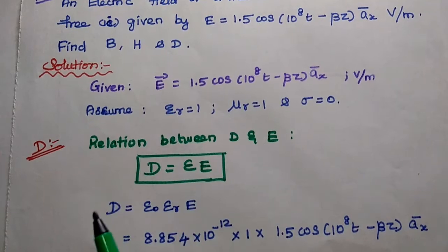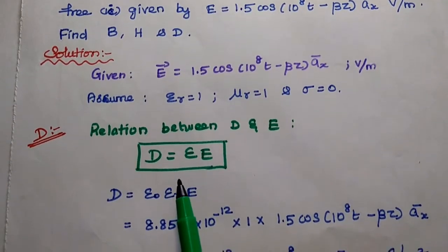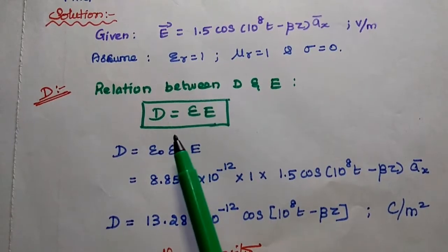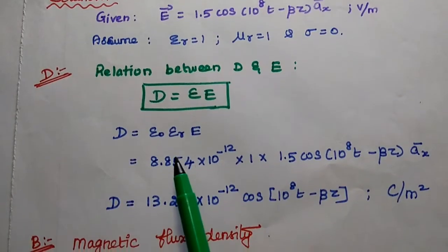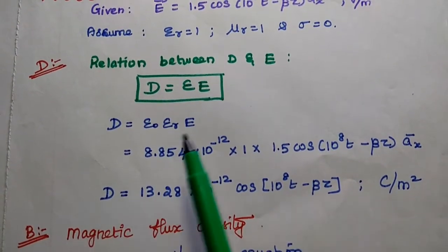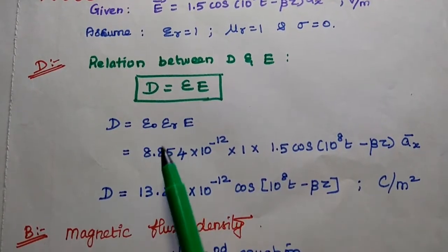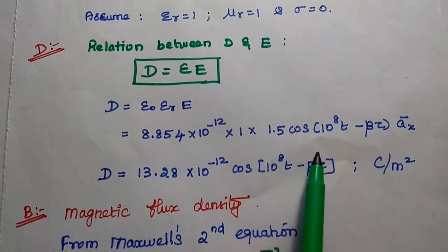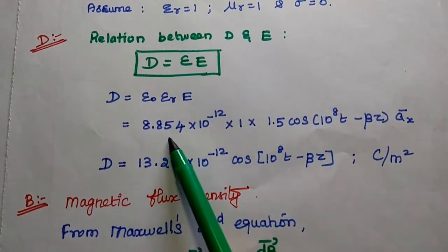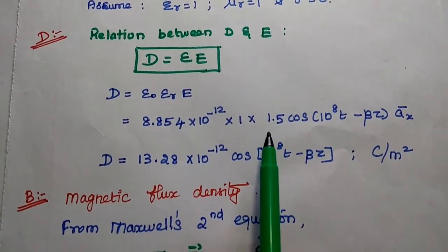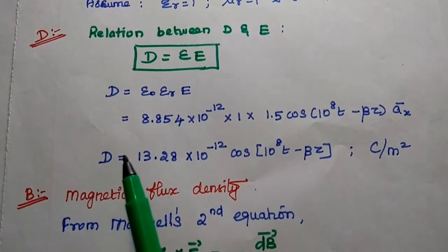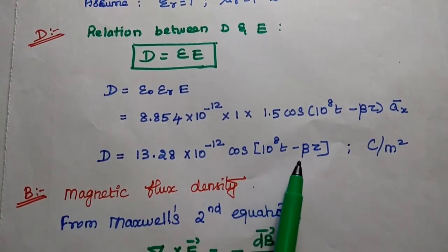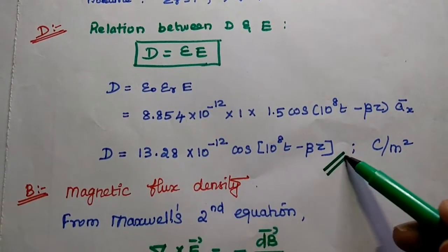First we are going to find out the electric flux density D. The relation between D and E is D = ε E, where ε = ε₀ ε_r. Substituting ε_r = 1 and ε₀ = 8.854 × 10⁻¹², we multiply by 1.5 and get D = 13.28 × 10⁻¹² cos(10^8 t − β z) â_x. This is the electric flux density value.